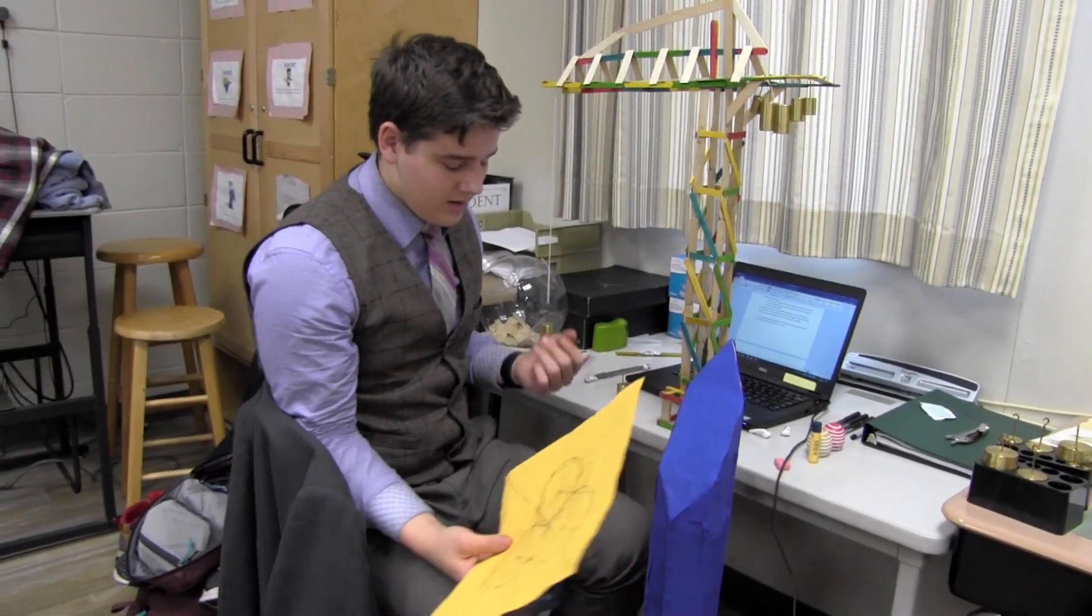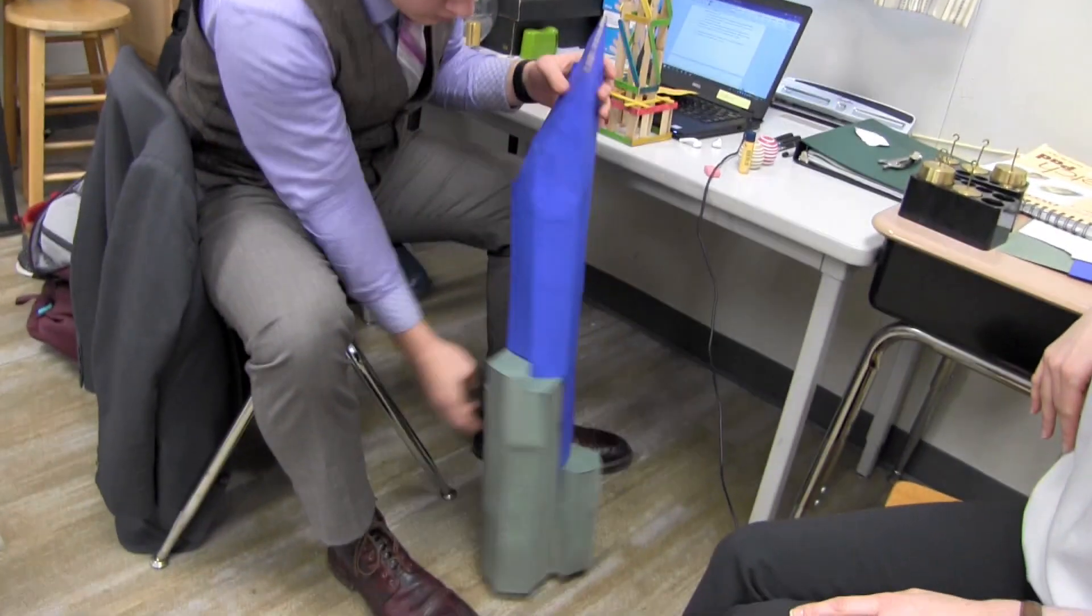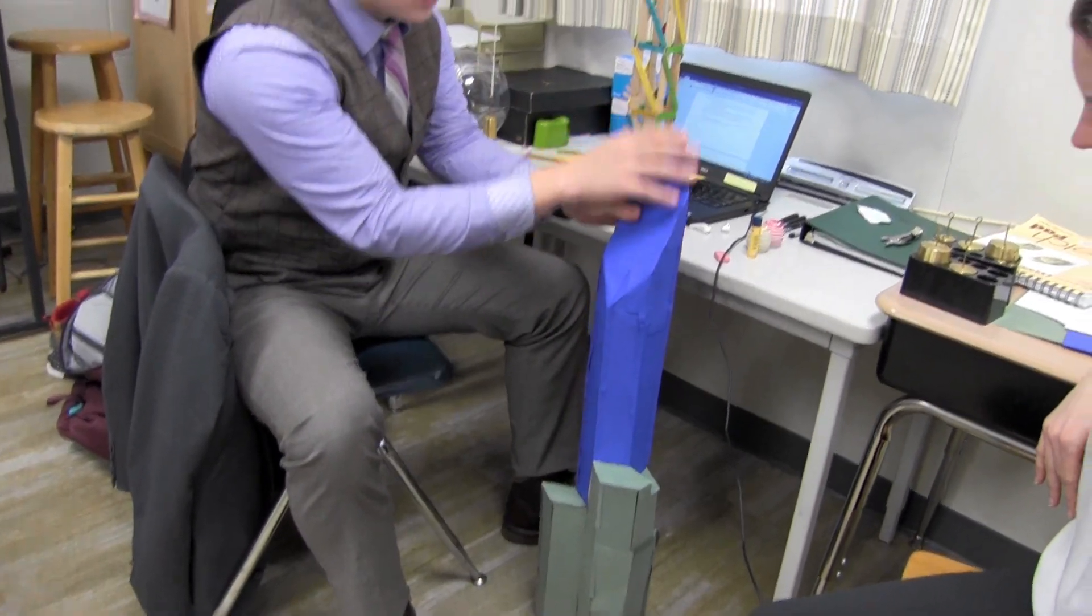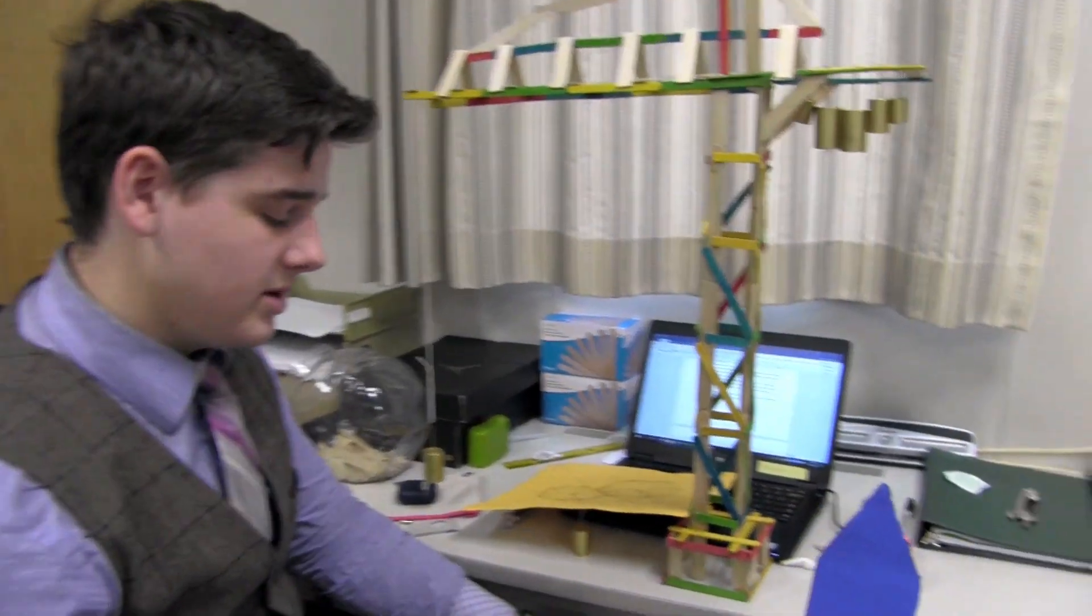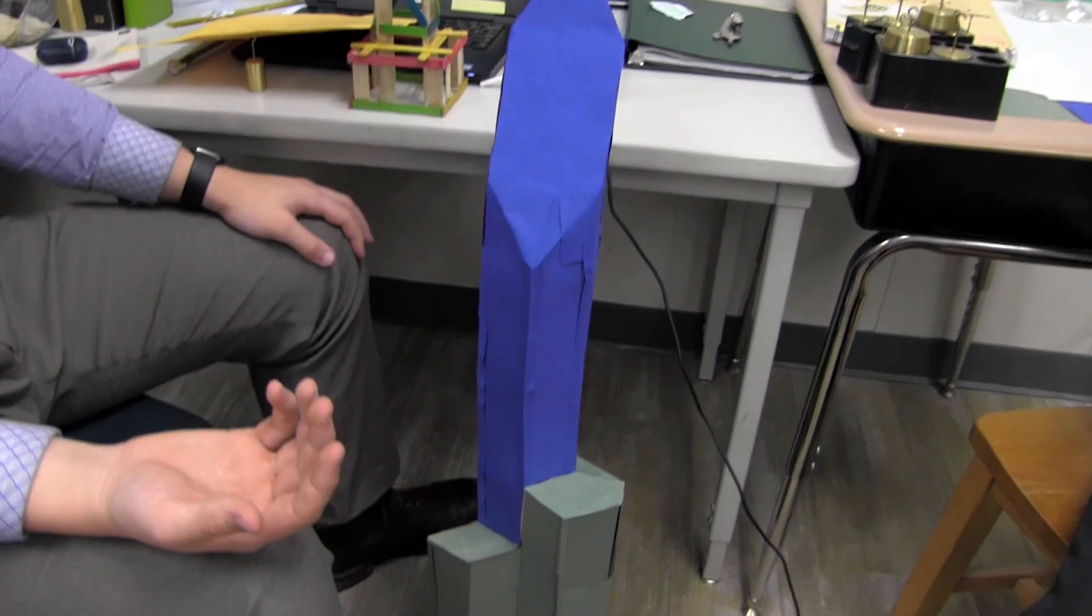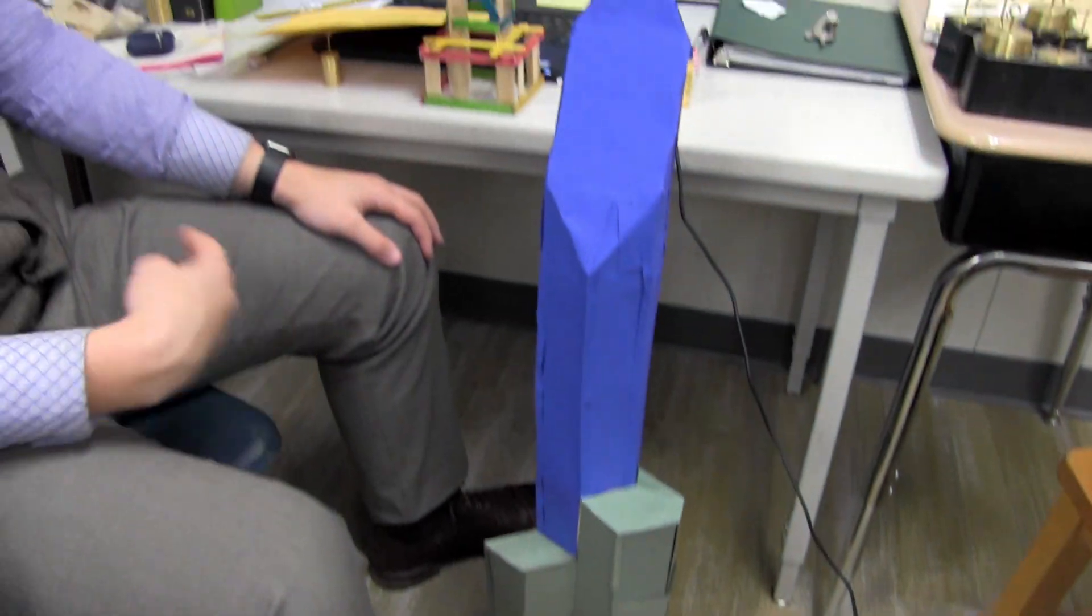So I decided to add these substructures attached to the main skyscraper body made out of a material called CLT, which is cross laminated timber. It's a high strength material that is nearly as strong as concrete but is better for the environment and looks better.